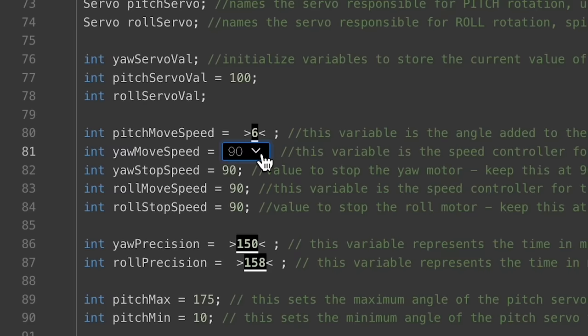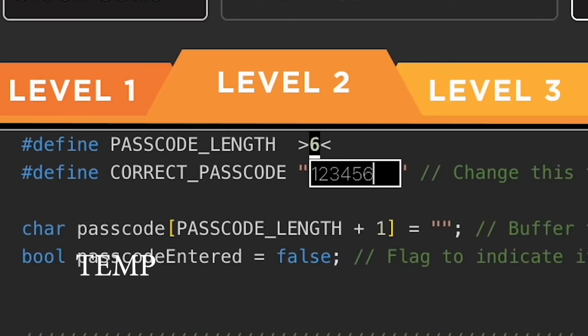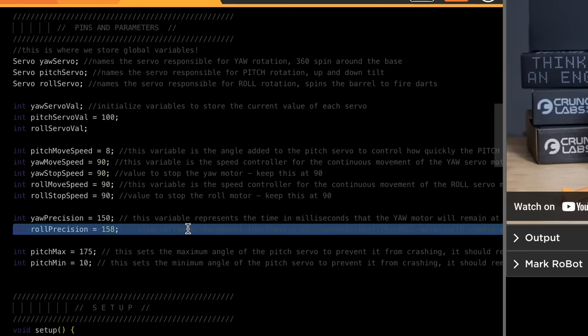At level two, you can now change some key variables like how quickly the barrel turns or how many numbers to put in your passcode lock. And then at level three, you have full access to change everything.